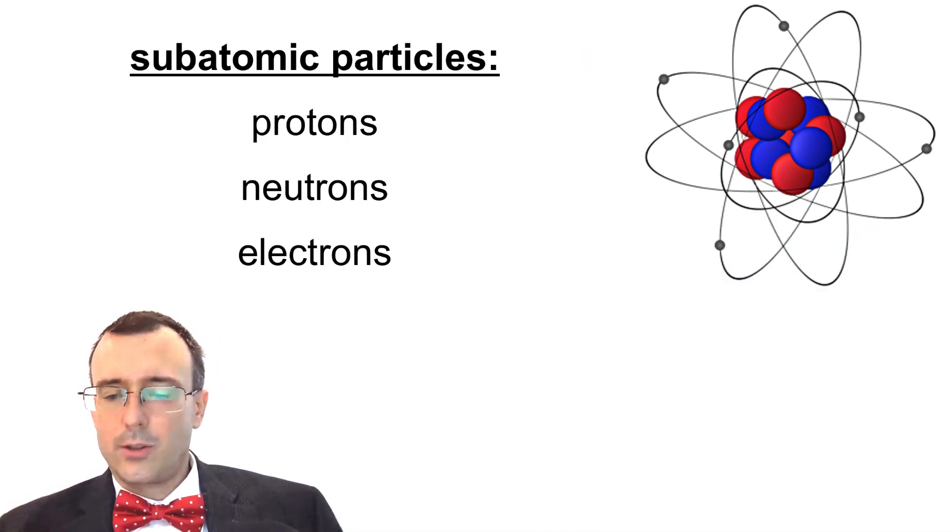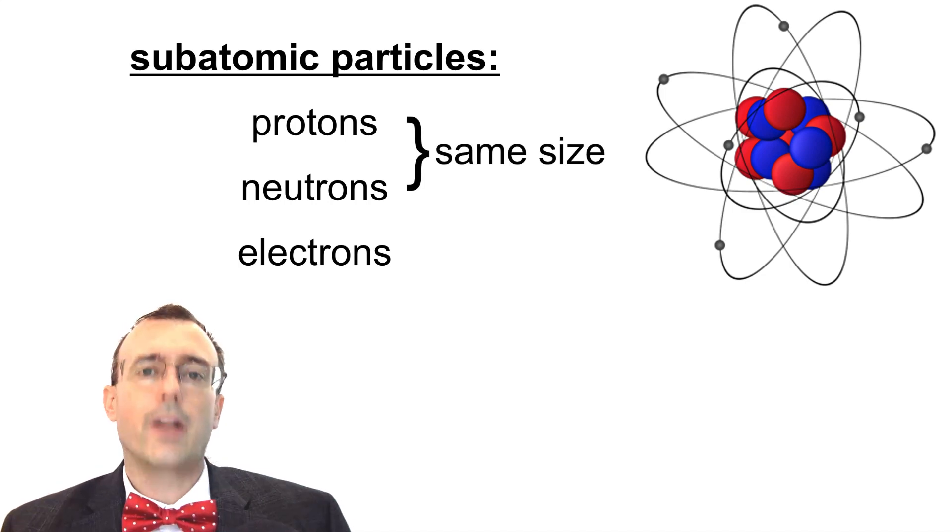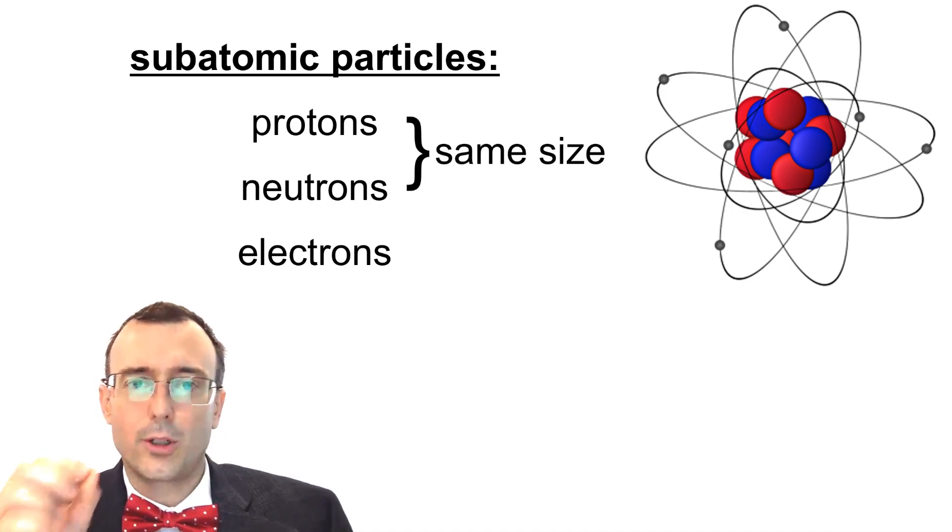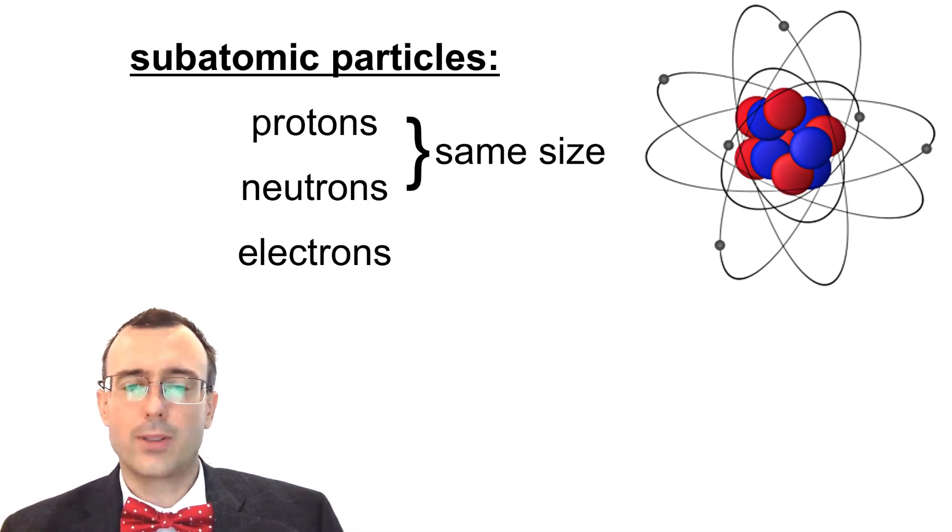So that's crazy. Now, what do we know about protons, neutrons, and electrons? Your protons and neutrons are about the same size. So that's your grain of sand if an atom were the size of a football stadium.